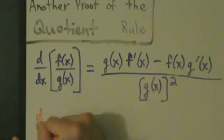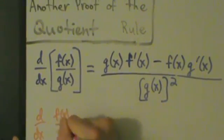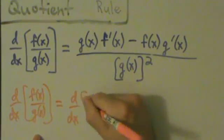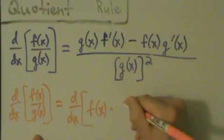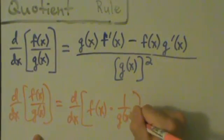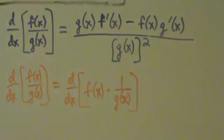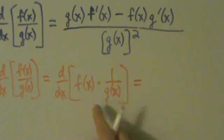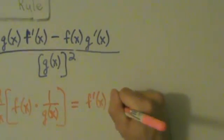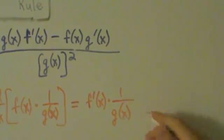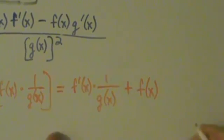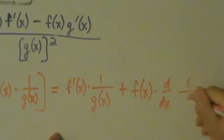So d/dx of f(x) divided by g(x) — first we want to rewrite that. f(x) divided by g(x) is the same as f(x) times 1/g(x). Now we're going to use the product rule on this, because this is just one thing times another. The product rule gives us: derivative of the first times the second, which is f'(x) times 1/g(x), plus the first times the derivative of the second, which is f(x) times d/dx of 1/g(x).